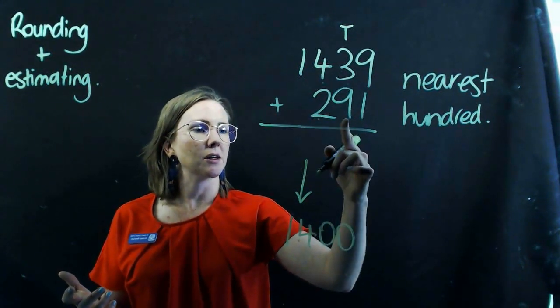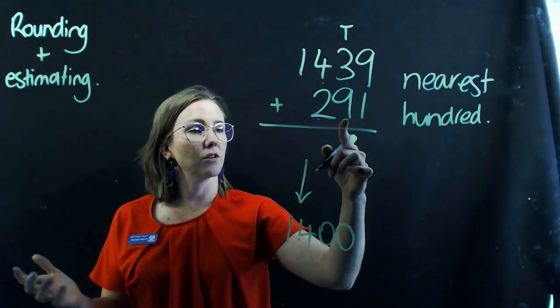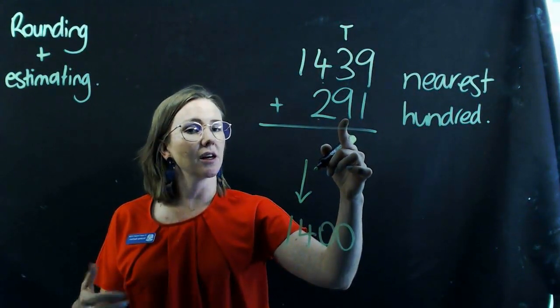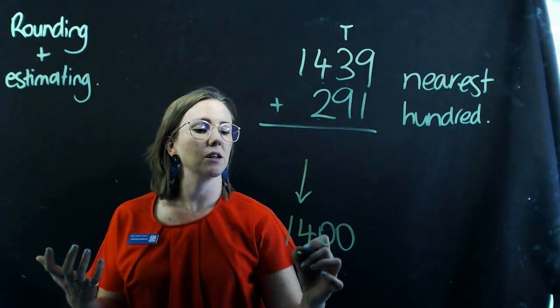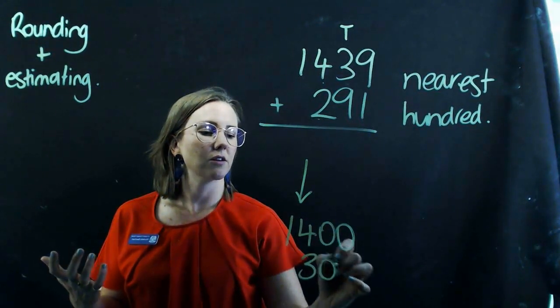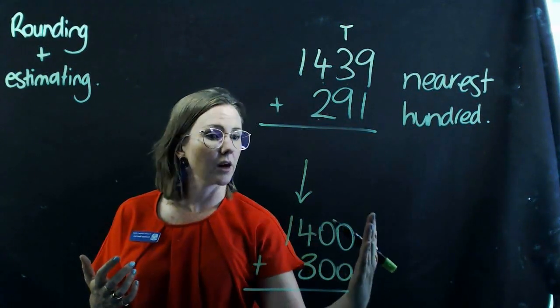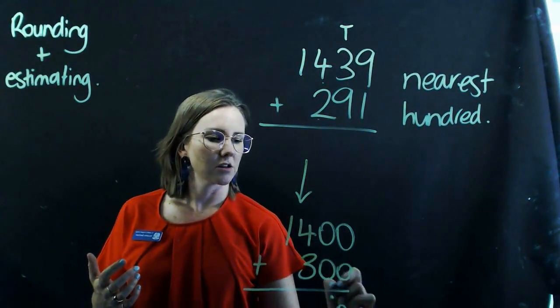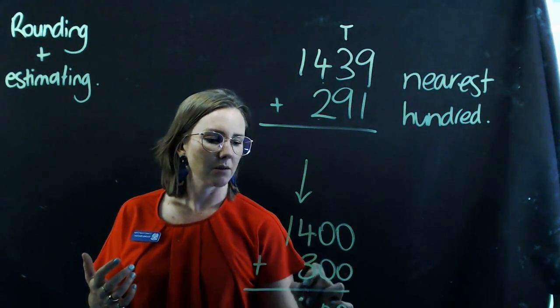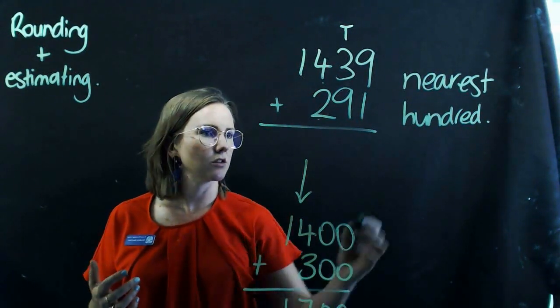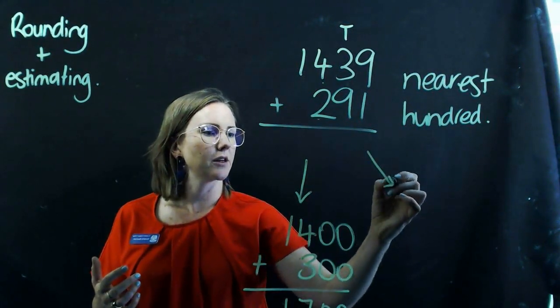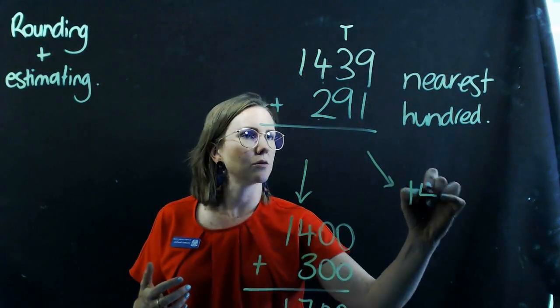And here, I look at my tens column again to see what to do. And because it's 9 above 5, I round it up to the nearest hundred, which is 300. Of course, taking care with your setting out that everything is in line from the right-hand side. So we've got 0, 0, 7 and 1. So 1,700. Let's see if we can get close with the actual sum.